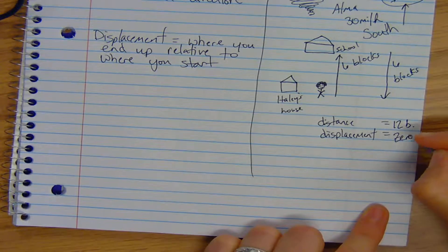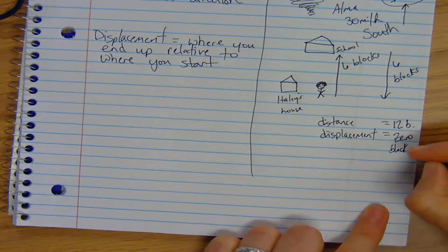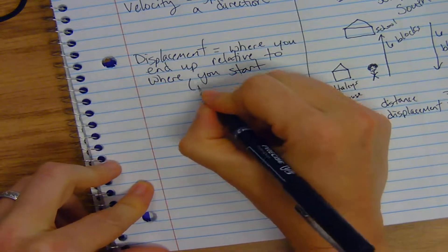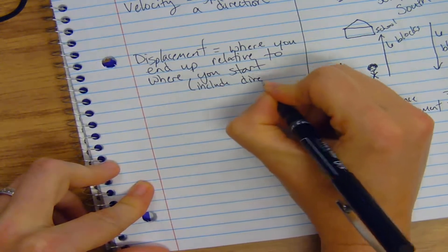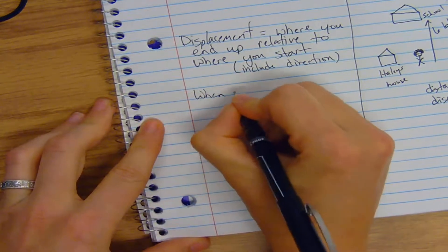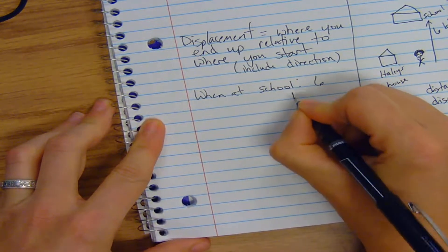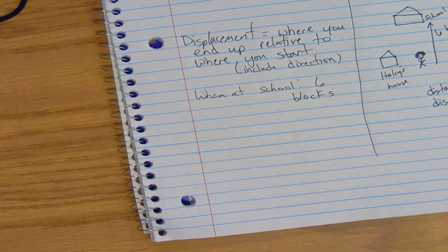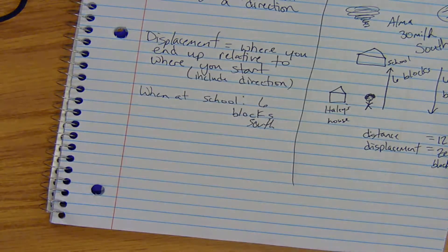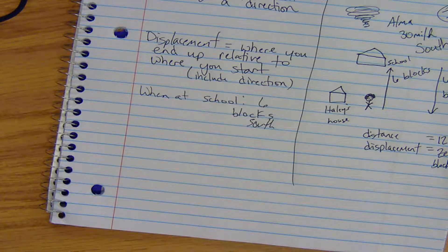Displacement. I'm going to put zero blocks. But, right now, Haley, poor Haley is here. She is six blocks from home. What is her displacement right now? Six blocks. Because, as compared to where you start, direction matters. So, this thing has to include direction. When at school, she is actually six blocks. Which way is she from her house? South. Perfect. Well done. So, Haley is six blocks south. She has been displaced. Six blocks south. When she goes home, no displacement, but a total distance of 12 blocks. That's the difference.